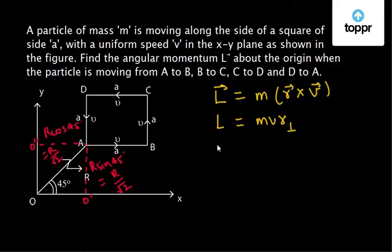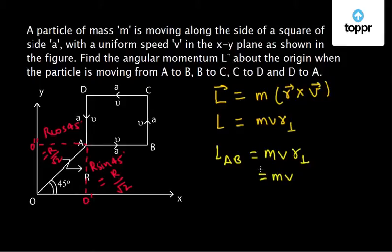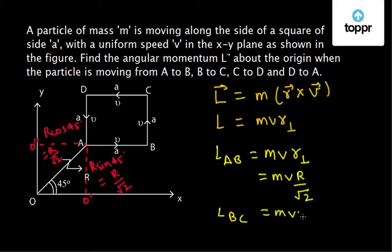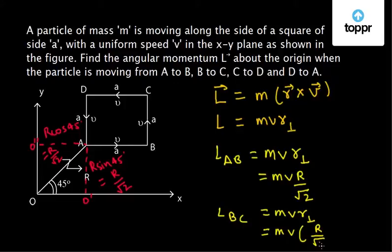For the path A to B, L(A→B) = m·v·r_perp, where r_perp = O'A = r/√2, giving L(A→B) = mv·(r/√2). For the path B to C, L(B→C) = m·v·r_perp, where the perpendicular distance is O'A + AB = r/√2 + a. So L(B→C) = mv·(r/√2 + a).